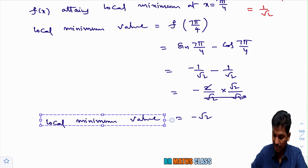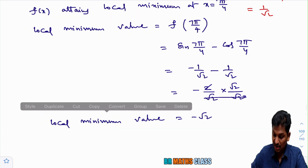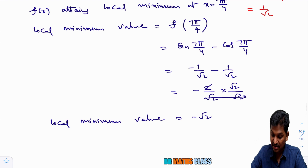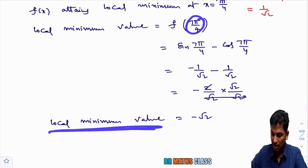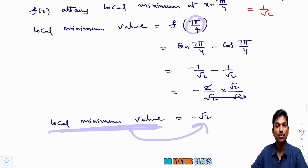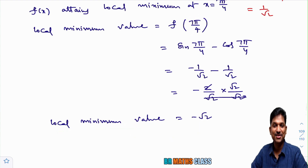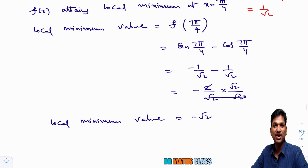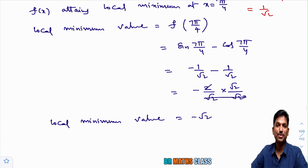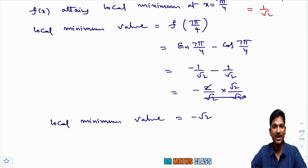The function attains a local minimum value of −√2 at x = 7π/4. I hope you understand these problems. If you like this video, please drop a like and share it with your friends. If you haven't subscribed to my channel, please subscribe. Thanks for watching, take care, bye bye.